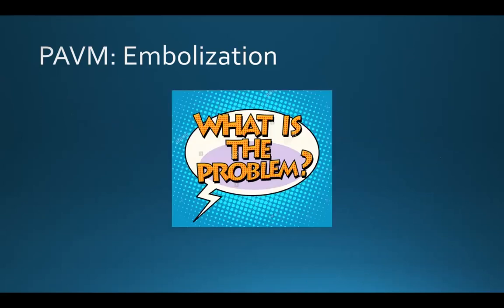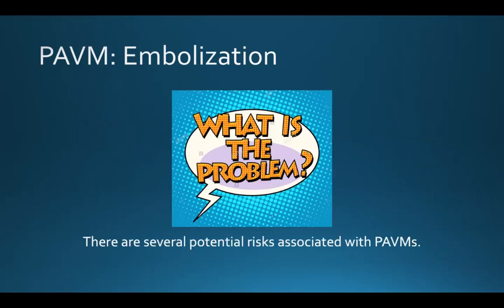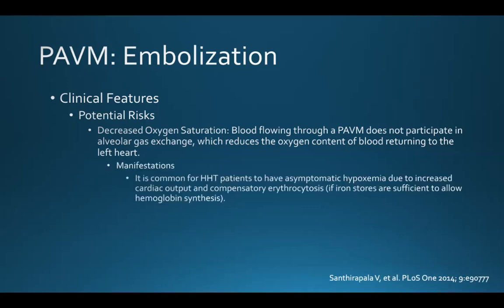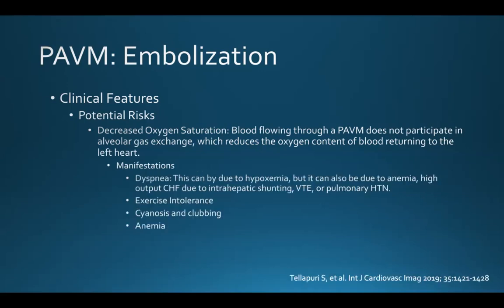There are several potential risks associated with PAVMs. The first is decreased oxygen saturation — blood flowing through a PAVM doesn't participate in normal alveolar gas exchange, reducing the oxygen content of blood returning to the left heart. It's common for HHT patients to have asymptomatic hypoxemia due to increased cardiac output and compensatory erythrocytosis if iron stores are sufficient. Patients can present with shortness of breath, anemia, high-output heart failure due to intrahepatic shunting, venous thromboembolic disease, or pulmonary hypertension, as well as exercise intolerance, cyanosis, and clubbing.